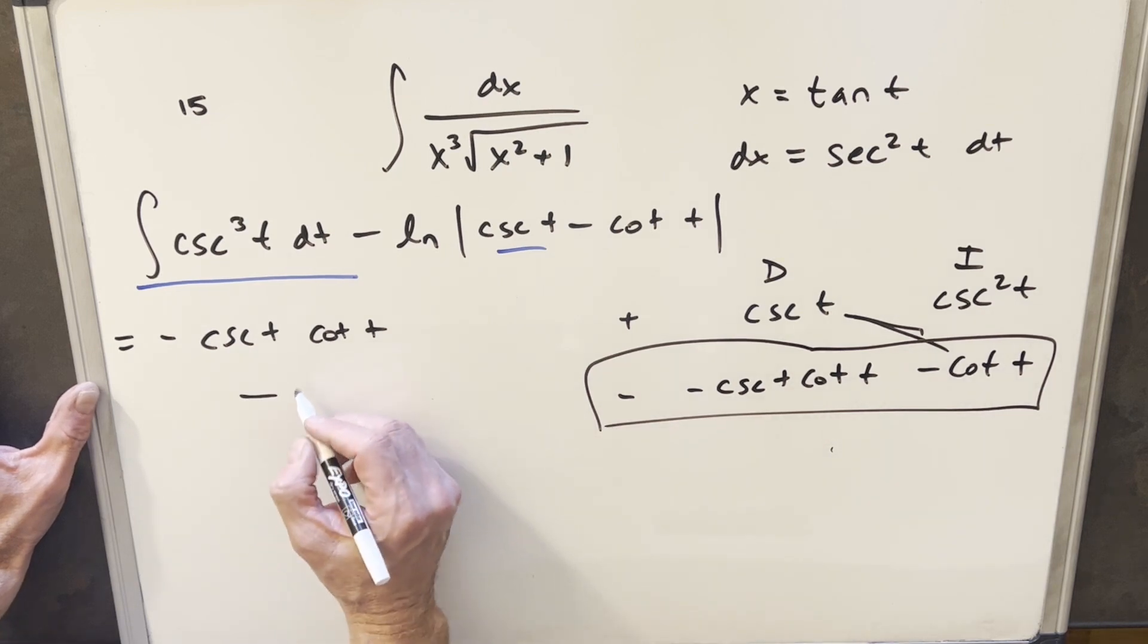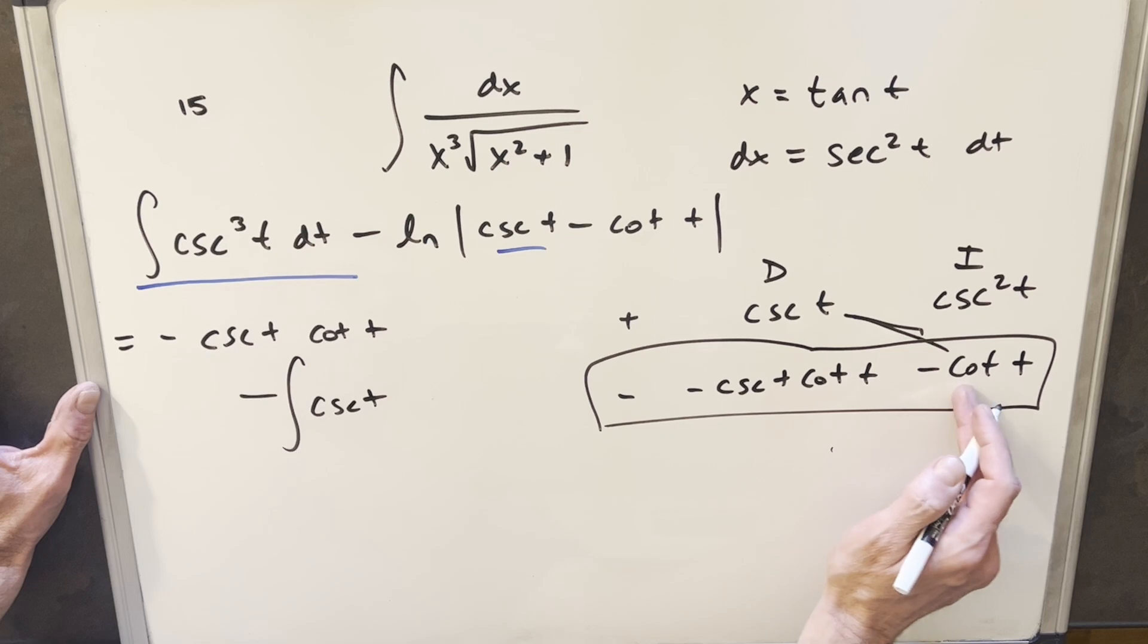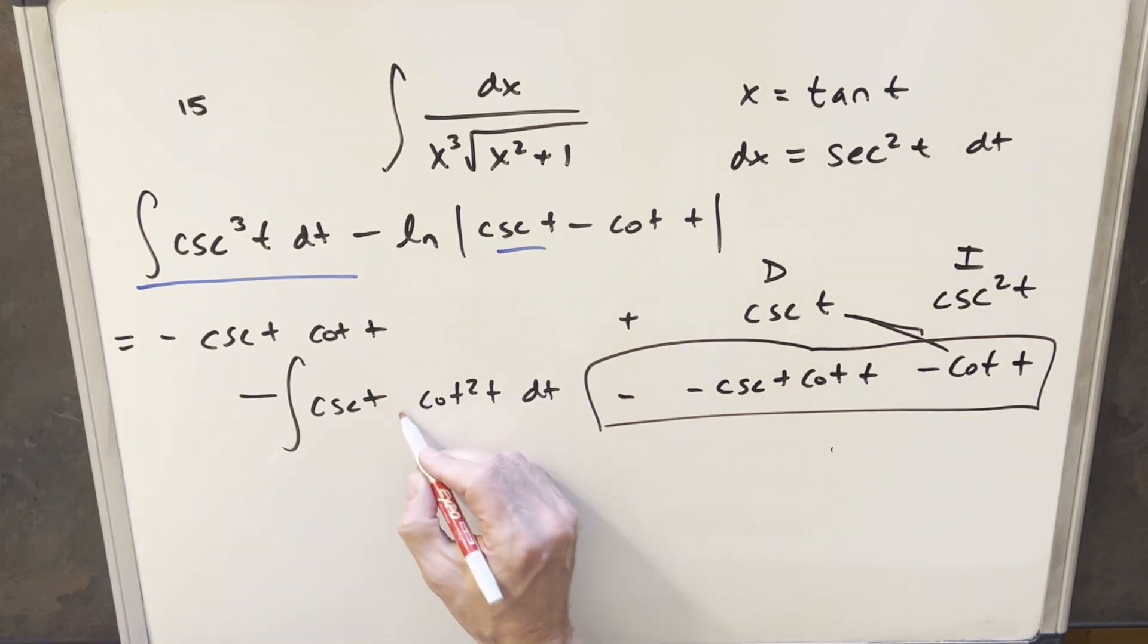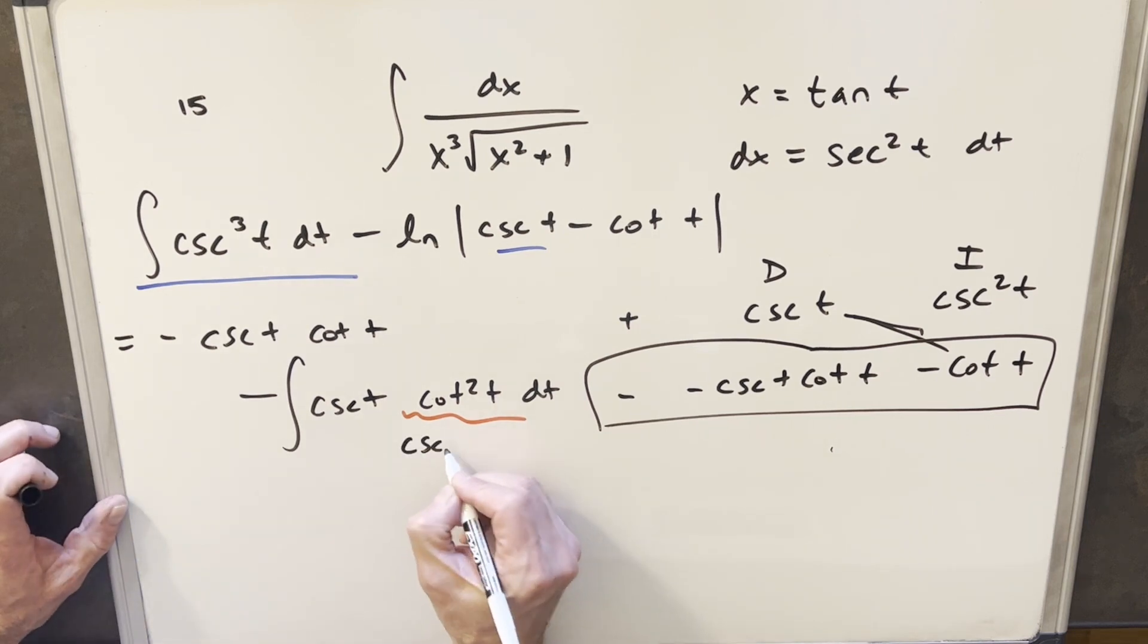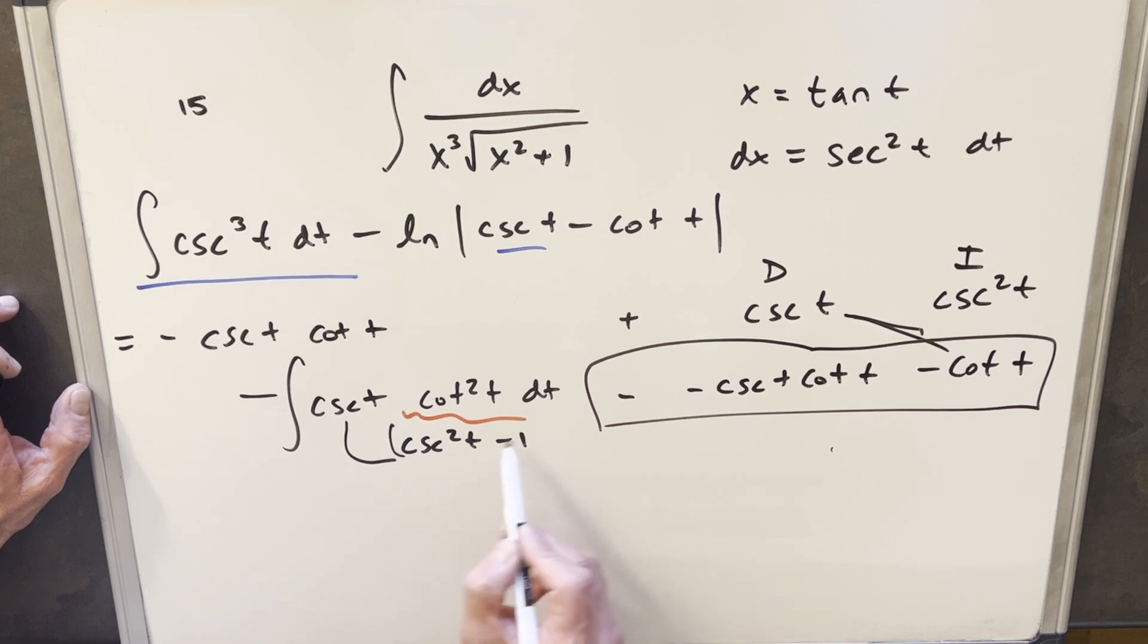So when I write this, we'll have our minus out front. We'll have a cosecant t, and this is going to become cotangent squared. But now what I can do is on this, we'll use another identity. For this, I can write this as cosecant squared t minus 1. And then we'll distribute this in here. Now let me clean this up a little bit so it's not too confusing.